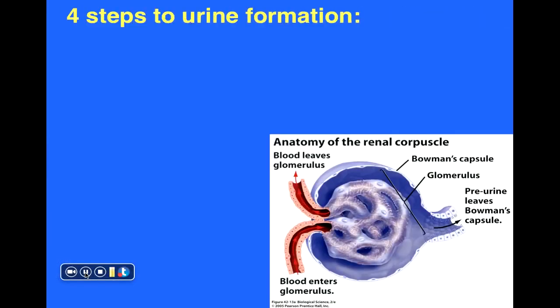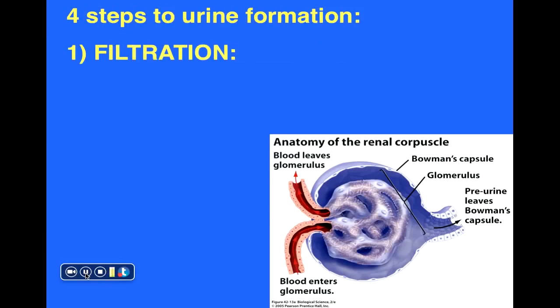There must be distinct mechanisms in place to conserve water and enable us to produce urine more concentrated than the blood that is initially filtered. Let's now take a look at how urine is produced and how we can actually produce such concentrated urine, identifying four general steps involved in the production of urine.